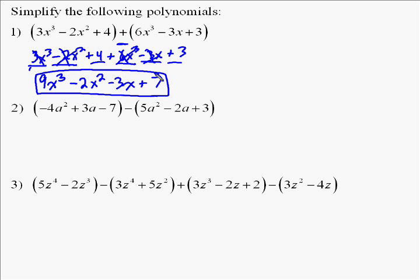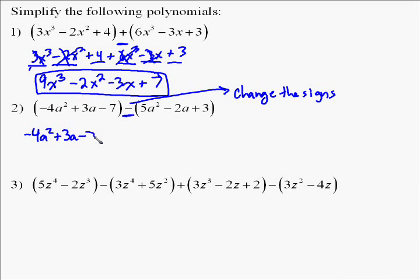Okay, for the next problem, the difference is we now have a negative. So this would be considered subtracting polynomials versus adding polynomials. And there's a couple ways to look at this subtraction. One way would be considered as having a negative 1 in front and use a distributive property. Or, the other way that a lot of people like to do is just go through and change the sign of everything in the parentheses.